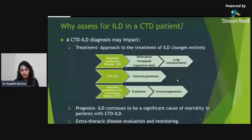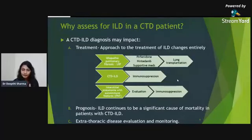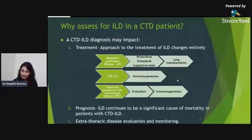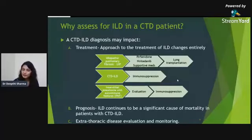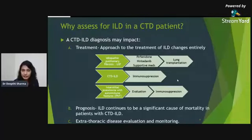Why do we assess for ILD? There are three implications. First, treatment: if a patient has a UIP pattern and it is idiopathic pulmonary fibrosis, management goes toward antifibrotics like pirfenidone and nintedanib. But if CTD is diagnosed, management shifts to immunosuppression. The entity of interstitial pneumonia with autoimmune features — positive serology with interstitial infiltrates but no systemic symptoms — can also undergo immunosuppression after complete evaluation.